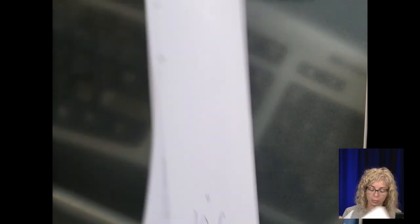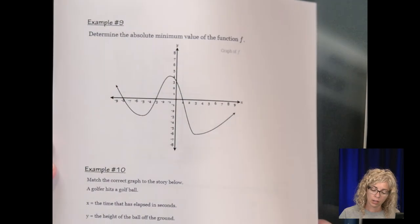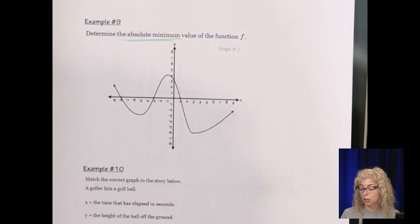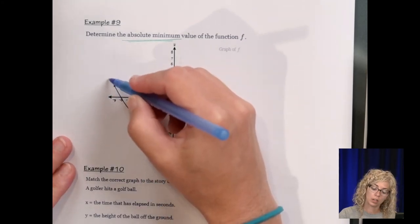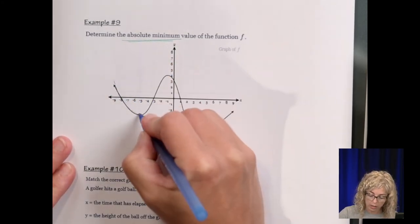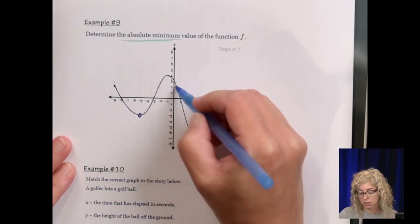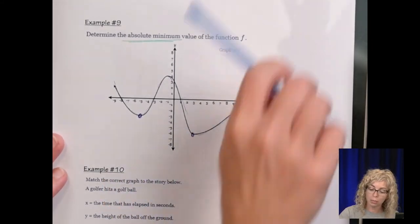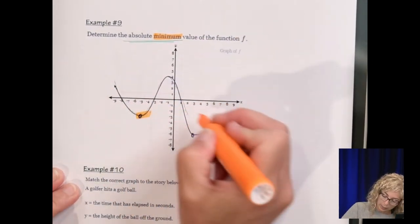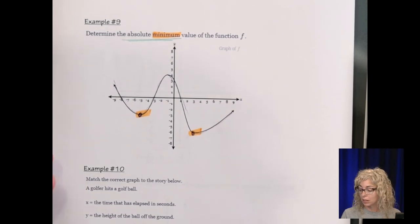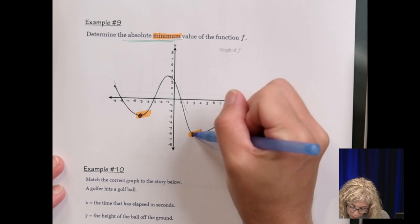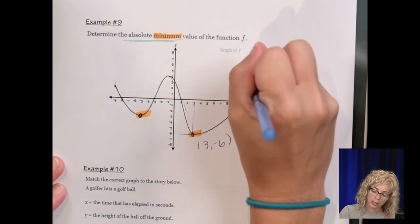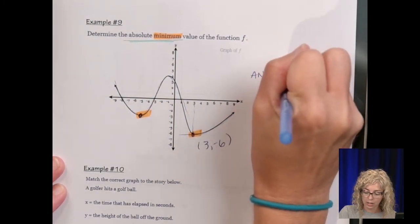And then the last two, examples 9 and 10. Determine the absolute minimum. Now absolute minimum means the absolute lowest point, because there's multiple lows. So this is starting from infinity. It's going down, it hits a low right here. And then it increases, hits a max, decreases, hits a low, and then it starts to go up again. So we have two minimums, this point and this point. But the absolute is the lowest. So let's write down the coordinates of this point. I'm going to go up, that's 3, left, negative 6. So the absolute minimum, my answer, is negative 6.